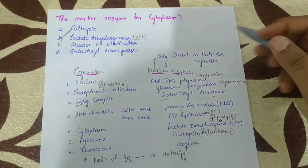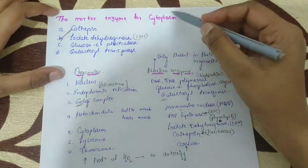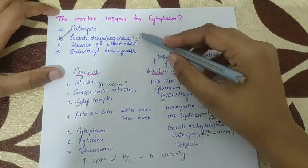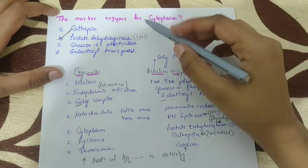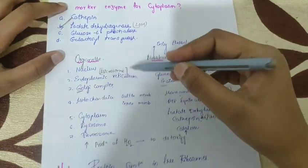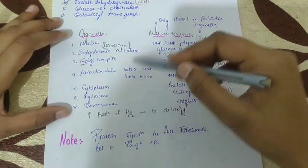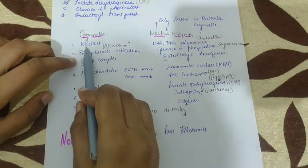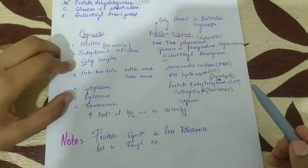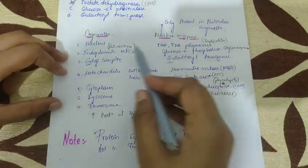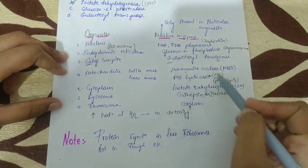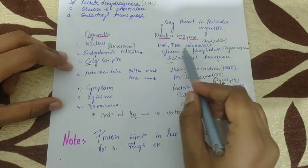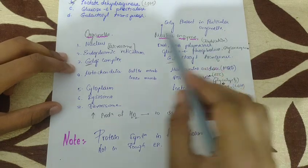If the marker enzyme is lactate dehydrogenase, then the organelle identified will be the cytoplasm, as lactate dehydrogenase is only present in the cytoplasm. For the nucleus, transcription and replication take place, so DNA and RNA polymerase are required for adding nucleotides. Therefore, DNA and RNA polymerase is the marker enzyme for the nucleus.